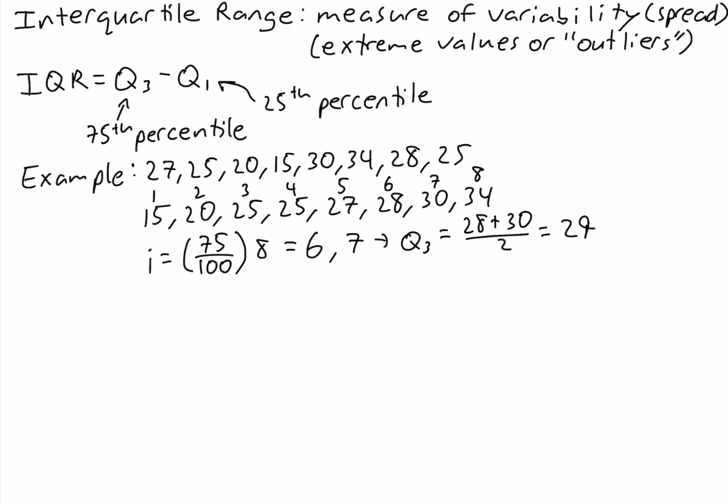Now let's calculate the first quartile or the 25th percentile. So we use 25. 25 over 100 times 8 equals 2. Since our index is an integer, we average the values in positions 2 and 3. So the first quartile equals 20 plus 25 divided by 2, which equals 22.5.